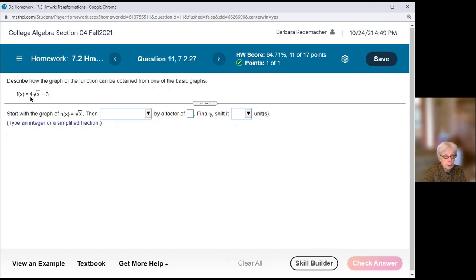This is a vertical stretch because the 4 is multiplying the square root of x and it's a number greater than 1. And then this minus 3 at the end, not under the function, but at the end is a vertical shift down 3 units.